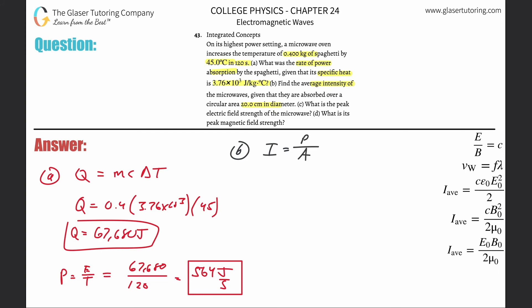So the intensity here is going to be the power we just found, 564 watts, divided by the area. They told you the diameter, and of course they gave it in centimeters. So there's going to be pi multiplied by half of the diameter, 10, but you've got to convert that into meters. So multiply it by 10 to the minus 2, and don't forget to square it.